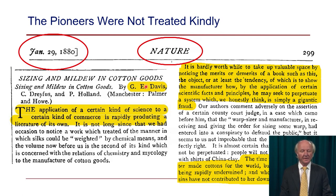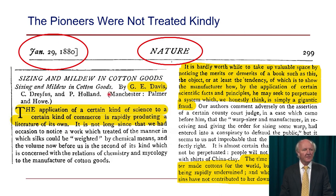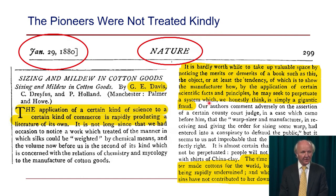George Davis was one of the pioneers of the profession. He wrote several books in the 1880s, and this particular book was reviewed in the august journal Nature in 1880. The review begins kindly enough: 'the application of a certain kind of science to a certain kind of commerce is rapidly producing a literature of its own' — a pretty good definition of engineering. But later things get substantially worse: 'It is hardly worthwhile taking up valuable space by noticing the merits or demerits of a book such as this, the tendency of which is to show the manufacturer how, by the application of scientific facts and principles, he may seek to perpetuate a system which we honestly think is simply a gigantic fraud.' So things couldn't really have got off to a worse start.